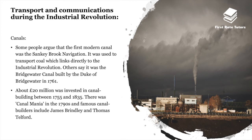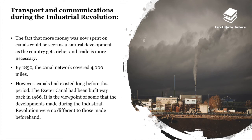The canal system also saw major changes. Some argue the first modern canal was the Sankey Brook navigation, used to transport coal. Others say it was the Bridgewater Canal, built by the Duke of Bridgewater in 1761. About 20 million pounds was invested in canal building between 1755 and 1835, and there was Canal Mania in the 1790s. Famous canal builders include James Brindley and Thomas Telford. By 1850, the canal network covered 4,000 miles, though canals had existed long before — the Exeter Canal was built in 1566.